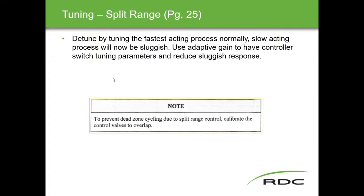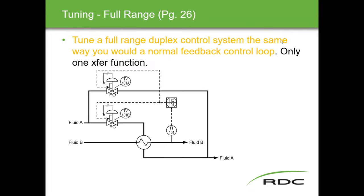An important note: to prevent dead zone cycling in split range control, calibrate the valves to overlap. In the examples shown, one valve covers 0–50% and the other covers 50–100%, so near the 50% boundary both valves are ambiguous. The fix is to have them overlap slightly — for example, 0–52% and 48–100% — to avoid cycling in that dead zone.